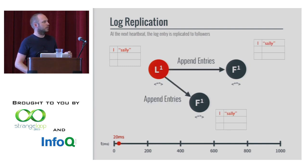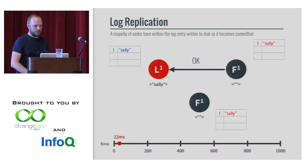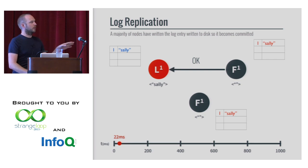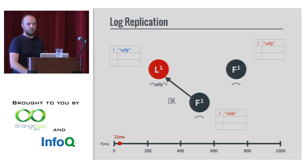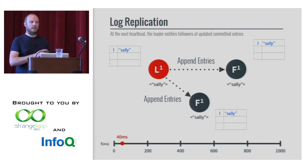The first entry in the log is going to be 'Sally.' Sally comes in, it's written to the log, but that value doesn't show anywhere yet outside of the log — it just lives on the leader. Then it sends an RPC called AppendEntries out to the followers, the followers write it to their log and confirm. As soon as one follower comes back first and says it's written, and it's written on a majority of nodes, that entry can be committed on the leader. Now it's committed on the leader. On the next heartbeat, it tells the followers to commit it too. Now everything is committed — we're all 'Sally.'